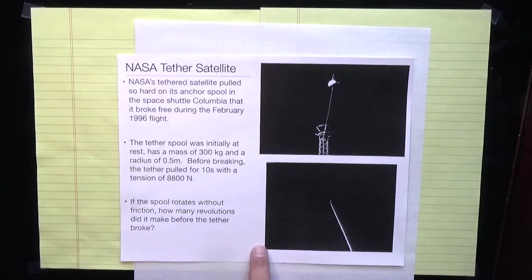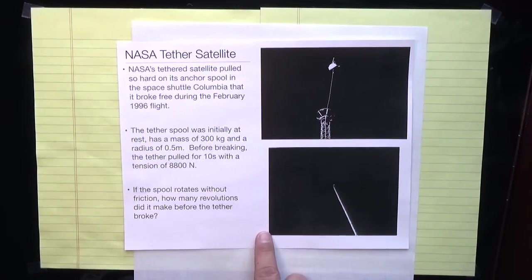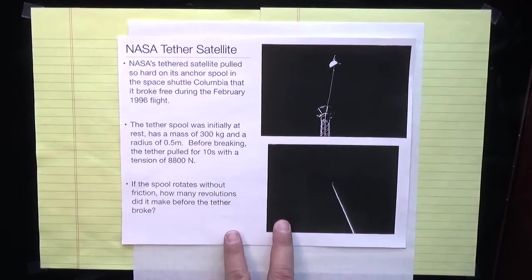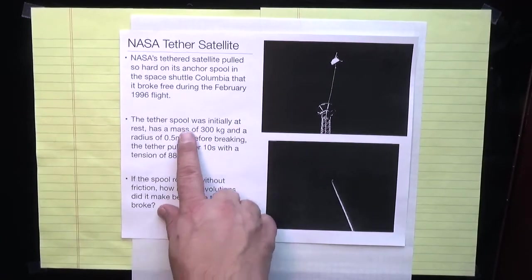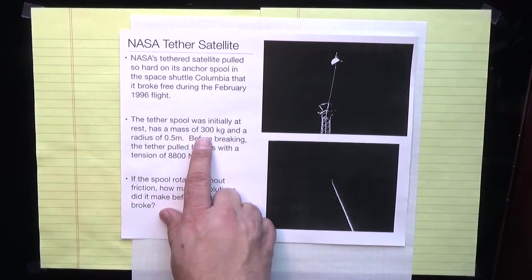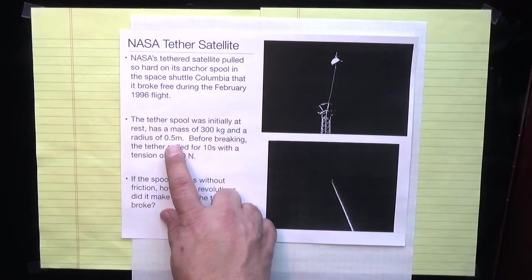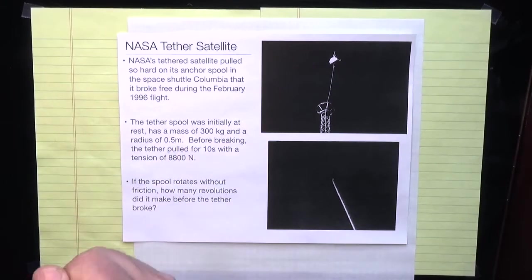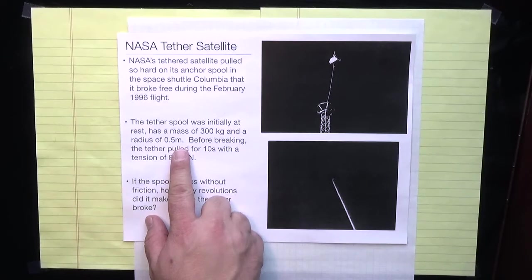We can do some calculations about that because you know enough physics now to analyze the problem. Imagine that the tether spool, the big spindle that the tether was originally wrapped around, was initially at rest and has a mass of 300 kilograms and a radius of 0.5 meters, fixed down there in the Space Shuttle Cargo Bay.